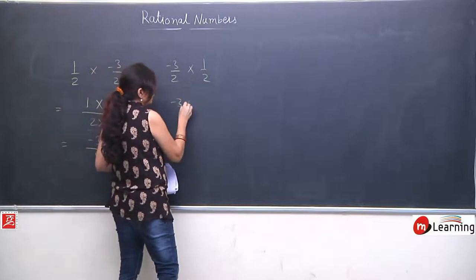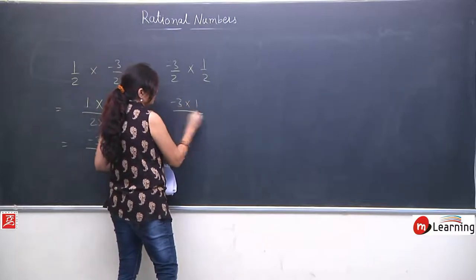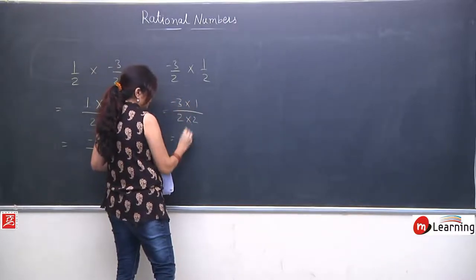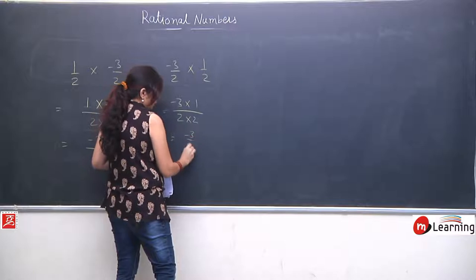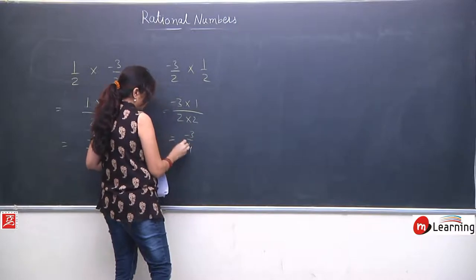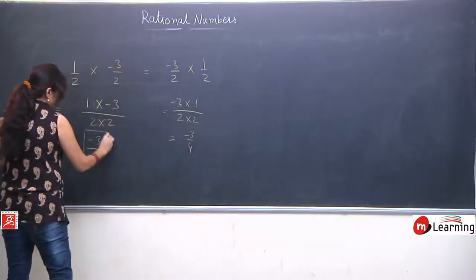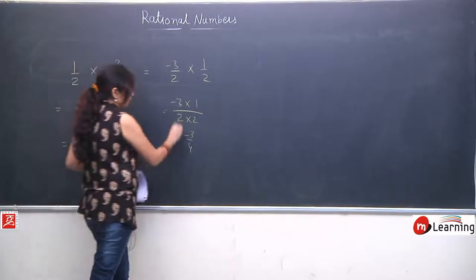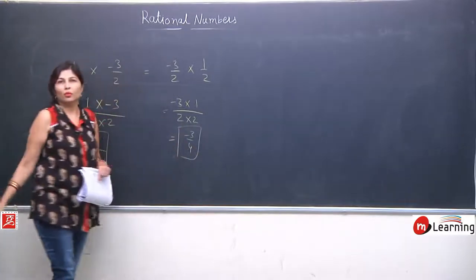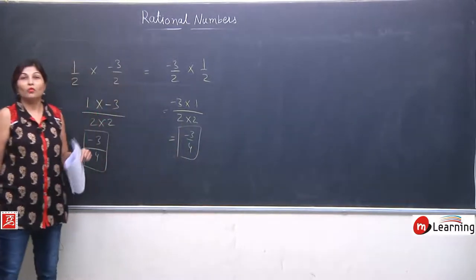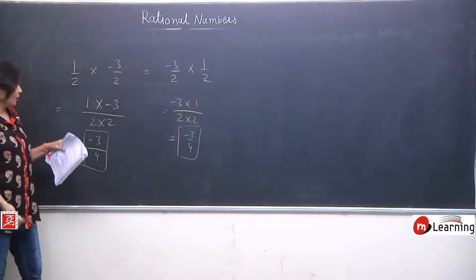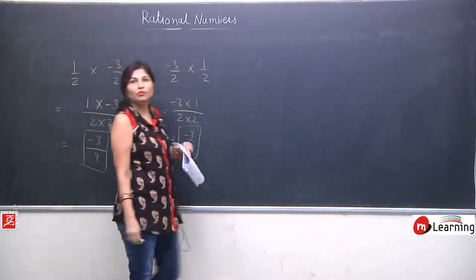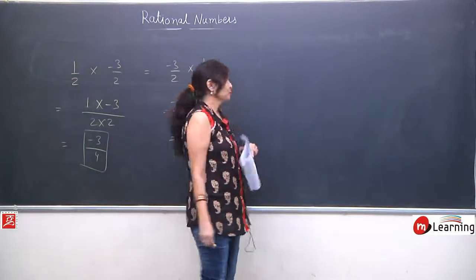Similarly, we will solve the RHS side also, and we get minus 3 upon 4. Now, what you are observing? The LHS is minus 3 upon 4 and RHS is also minus 3 upon 4. It shows that commutative law is applicable for multiplication.